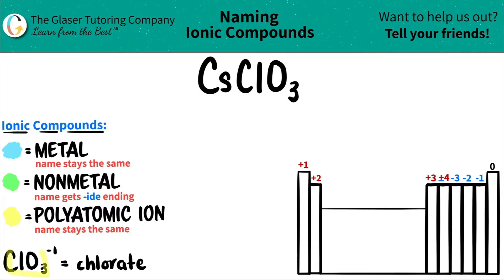ClO3 always has a negative one charge, and this polyatomic ion is always called chlorate. So I can identify: here's ClO3 — I know that polyatomic ion, that's chlorate.